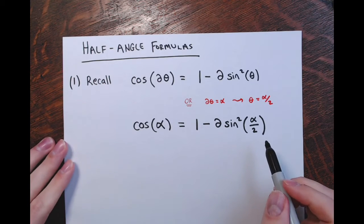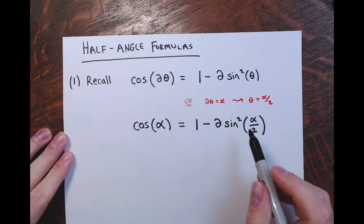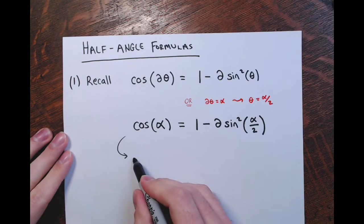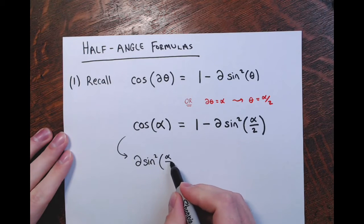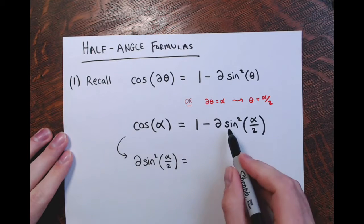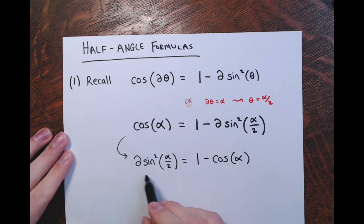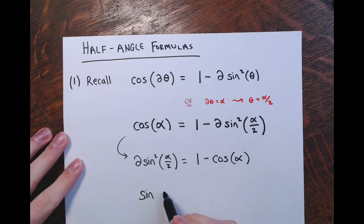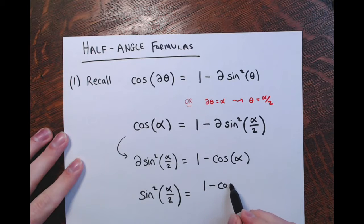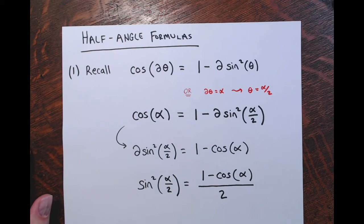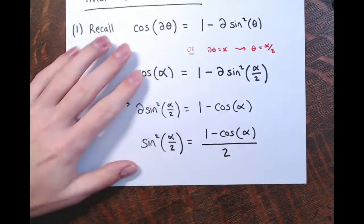I'll solve this for the sine. If I add the two sine squared and subtract cosine, we'd have two sine squared of half alpha equal to one minus the cosine of alpha. Then I divide by two, so sine squared of half alpha equals one minus cosine alpha all divided by two. Then I take the square root of both sides and get our half angle formula for the sine of half an angle.